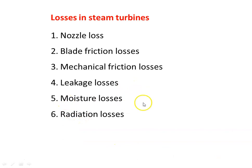The fifth type is moisture losses. The steam expands in the turbine, and because of this expansion the steam quality decreases. At a particular stage, the steam may contain some moisture, and the loss due to this moisture is called moisture loss. Finally, there are radiation losses. The steam inside the steam turbine is at a higher temperature, so the metal parts and casing are heated. There is radiation heat loss from these hot metal surfaces and the hot body of the steam turbine, which is called radiation loss.